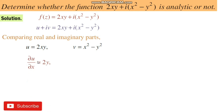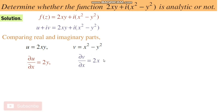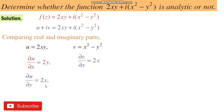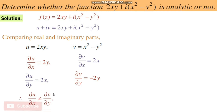For this, we compute ∂u/∂x = 2y, since y is treated as constant and the derivative of x with respect to x is 1. Then ∂v/∂x = 2x, since the derivative of x² is 2x and the derivative of −y² is 0 as y is treated as constant. Next, ∂u/∂y = 2x, and ∂v/∂y = −2y.